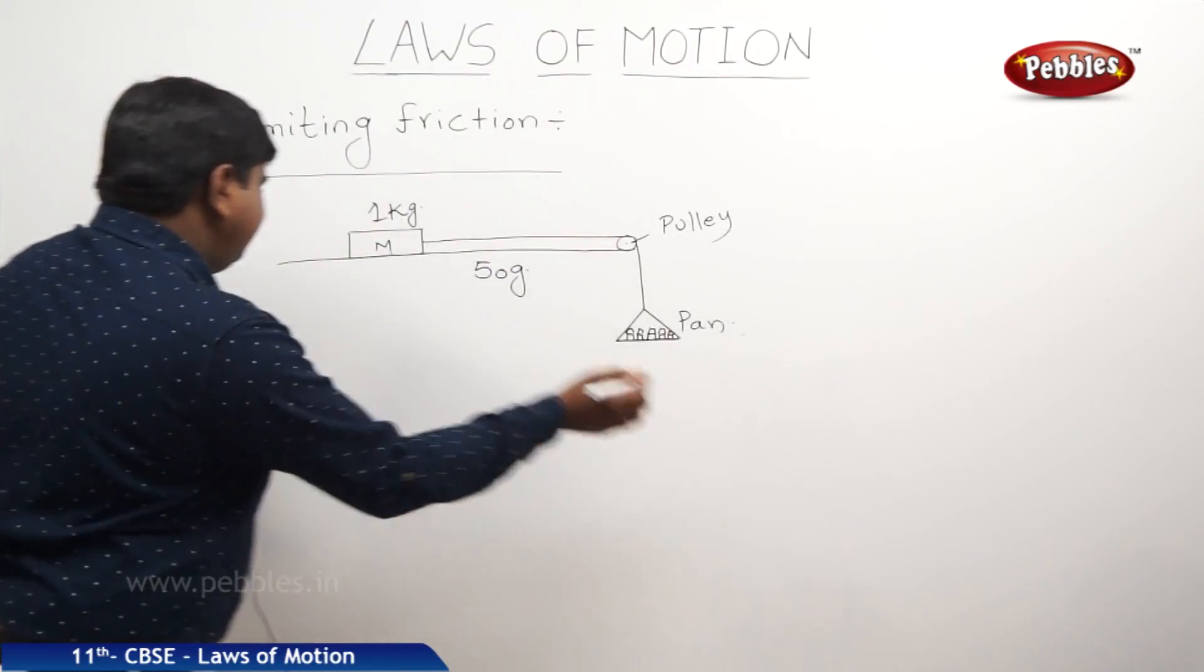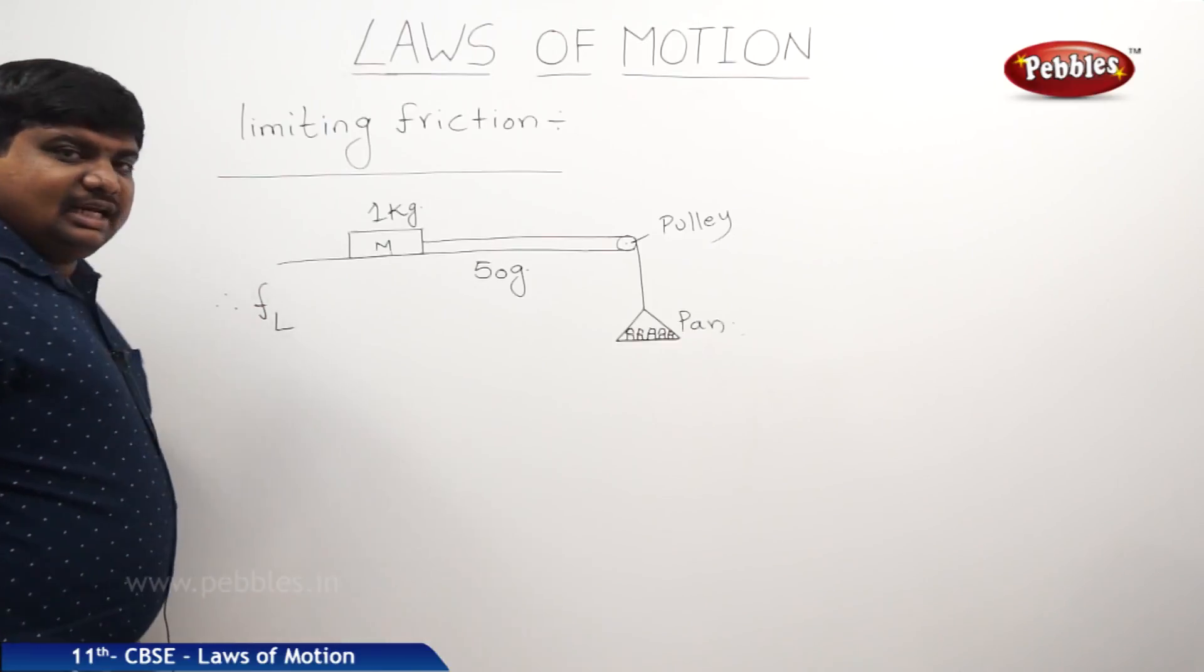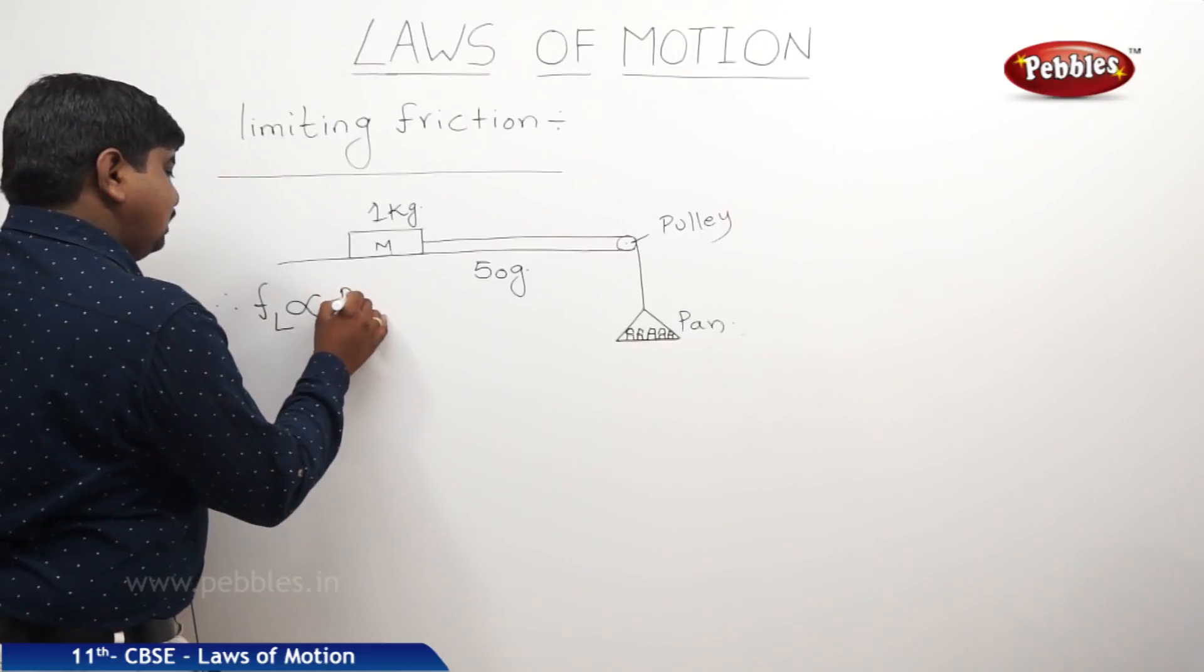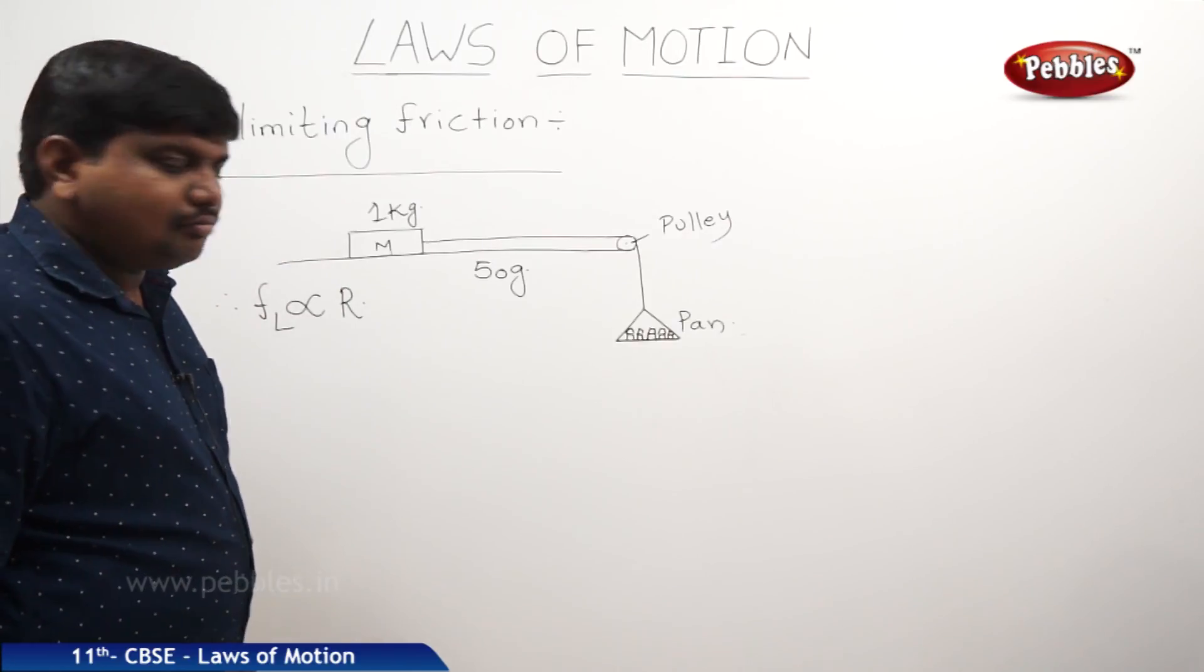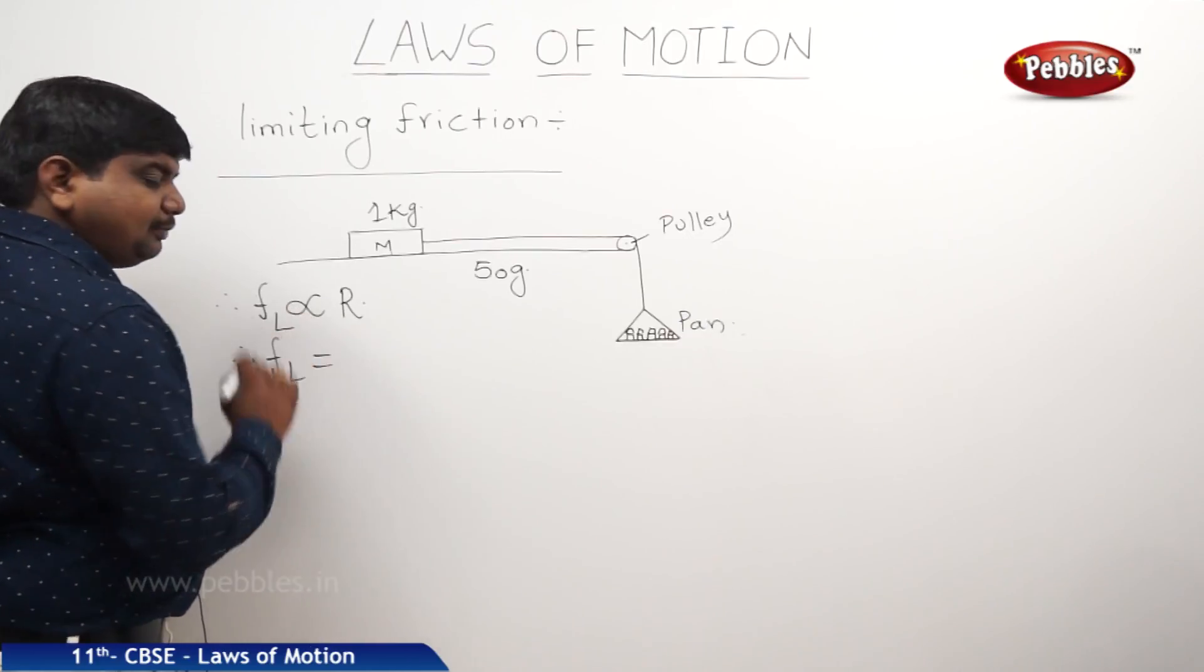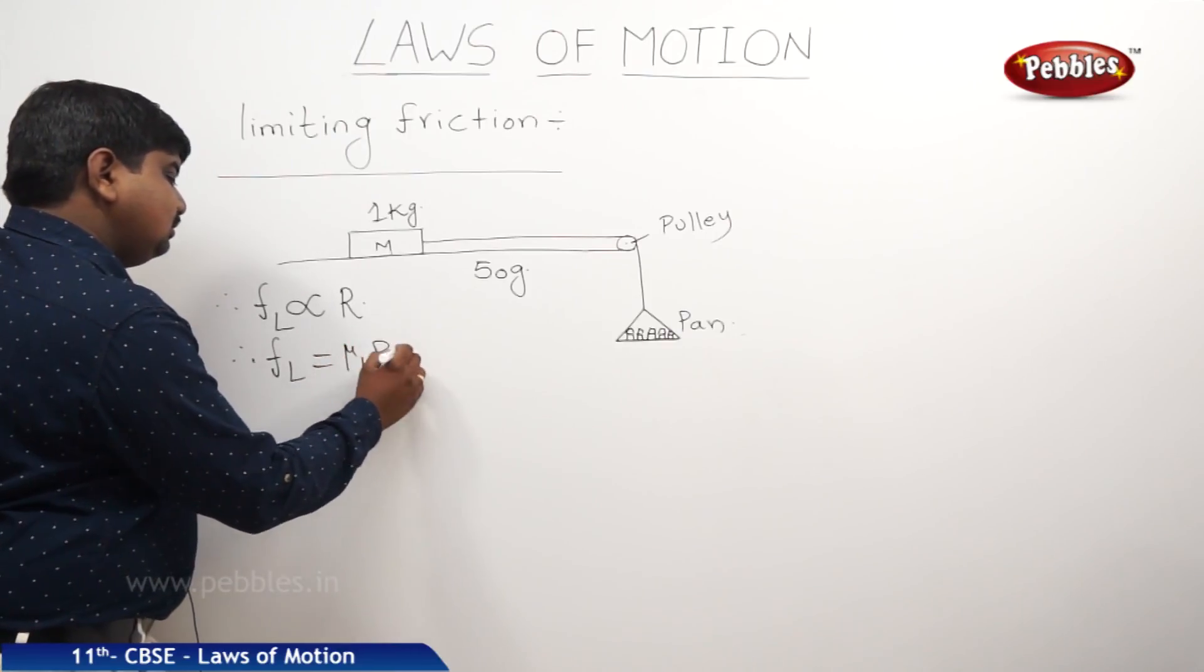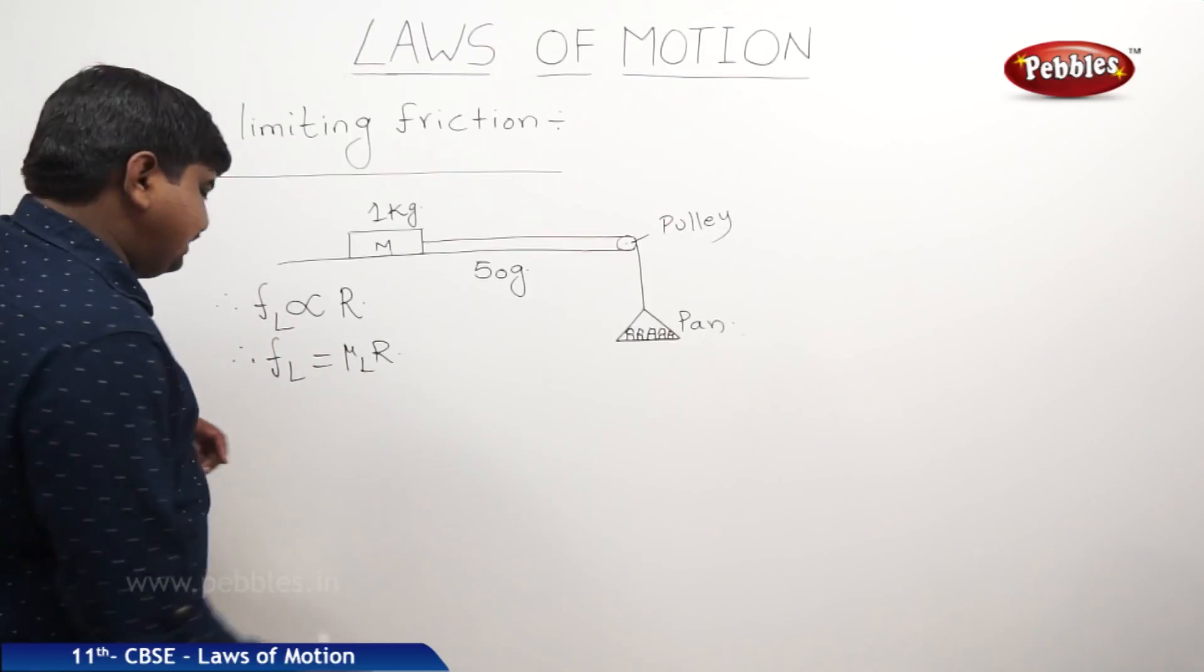So the limiting friction FL is directly proportional to R. So if you remove the proportionality constant, it will be μL*R. This μL is coefficient of limiting friction.